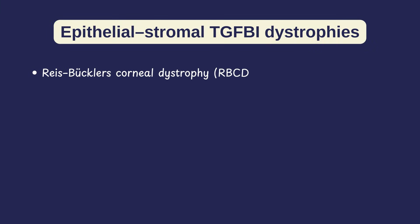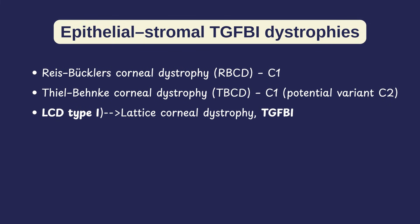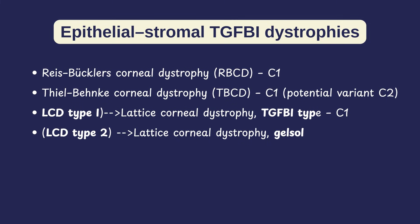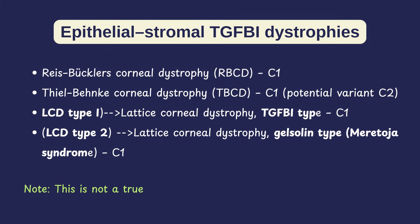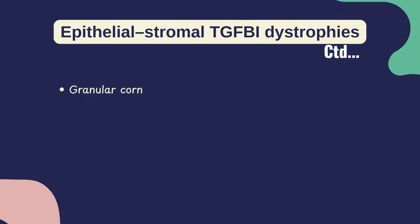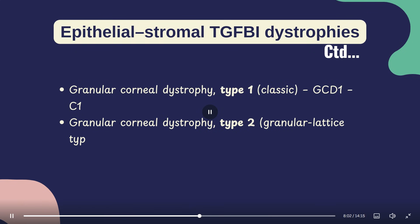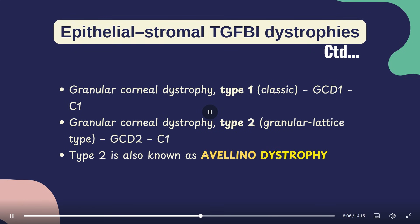Next are the epithelial stromal TGF-β1 dystrophies. This group has five key members, all linked to mutations in the TGF-β1 gene: Reis-Bücklers corneal dystrophy, Thiel-Behnke corneal dystrophy, Lattice corneal dystrophy type 1 (remember, only type 1 is in this group — type 2 is caused by the Gelsolin gene mutation with systemic amyloidosis features, also known as Meretoja syndrome), granular corneal dystrophy type 1, and granular corneal dystrophy type 2 — also known as Avellino dystrophy, which combines granular and lattice patterns.